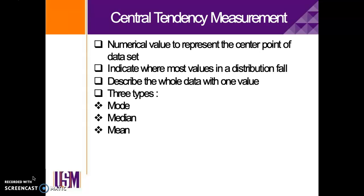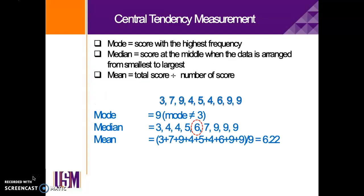Let us look at what is meant by mode. Mode is referring to the score with the highest frequency. Median is referring to the score at the middle when the data is arranged from smallest to largest — so you first sort the data from smallest to largest, and after that you get the score in the middle. Mean is referring to the total score divided by the number of scores.